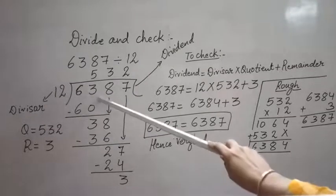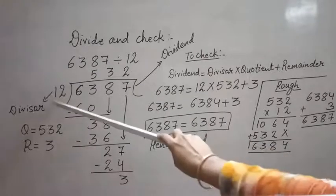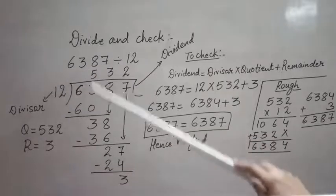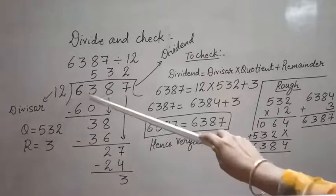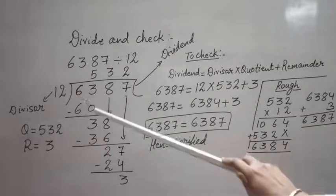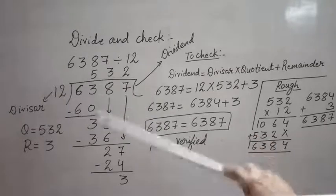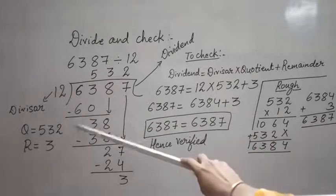Now I need to see how many times 12 goes into 63. We know that 12 fives are 60, and 12 sixes are 72. 72 will be bigger than 63, so I will be going with 12 fives are 60. Now I will subtract: 3 minus 0 is 3, 6 minus 6 is 0. Next digit I will copy, that is 8, so my number is 38.